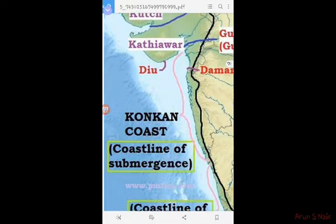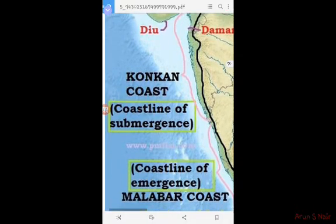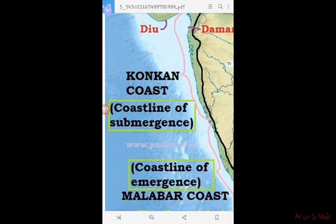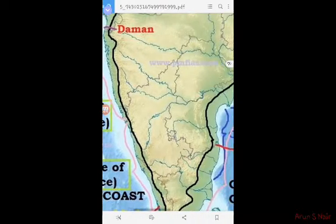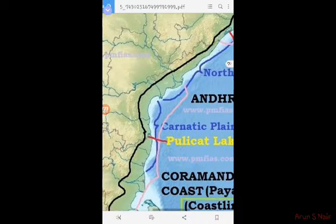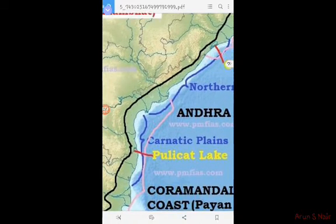To summarize: the Western Coastal Plain is called the Konkan Coast and the Malabar Coast, while the Eastern Coastal Plain is called the Coromandel Coast and the Northern Circars.